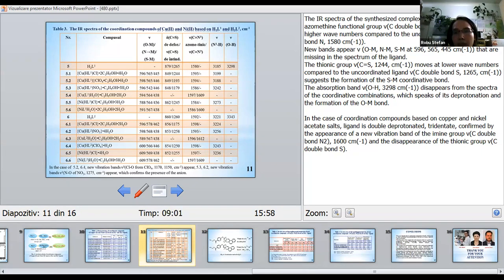In the case of coordination compounds based on copper and nickel acetate salts, ligand is doubly deprotonated and tridentate, confirmed by the appearance of a new vibration band of the imine group ν(C=N2) around 1600 cm⁻¹ and the disappearance of the thio group ν(C=S).